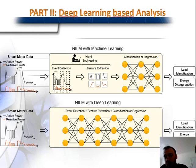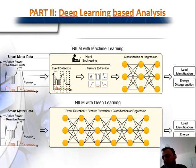NILM analysis can also be done through machine learning, but for machine learning we need to do hand engineering. We need to read the smart meter data, detect events, and extract features ourselves before classification. This hand engineering process is time-consuming, and nobody knows which features are most effective for NILM analysis. With deep learning, all hand engineering and classification are combined into one network, so we no longer need to do feature extraction manually — it is done in an automated way.